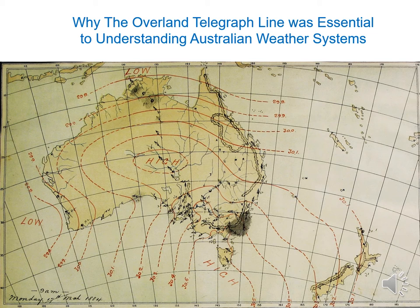Today, the international meteorological community is able to draw single synoptic maps for the whole globe. The first of these was formally produced for the International Geophysical Year of 1957. Now, global synoptic maps can be produced automatically, almost on a minute-by-minute basis, sourcing the required data from international data repositories that are filled with millions of observations per second by an array of communication technologies that descended from the telegraph.